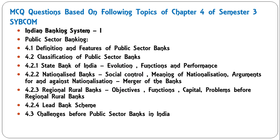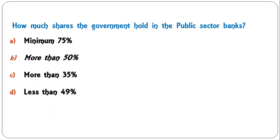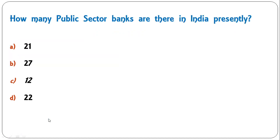First question: how much shares does the government hold in public sector banks? Options are minimum 75 percent, more than 50 percent, more than 35 percent, or less than 49 percent. The correct answer is more than 50 percent. Next: how many public sector banks are there in India presently? Options are 21, 27, 12, or 22.